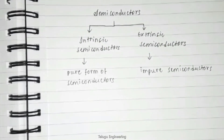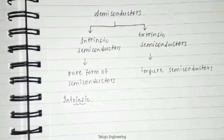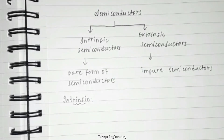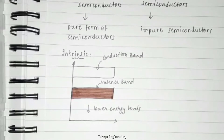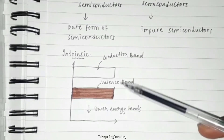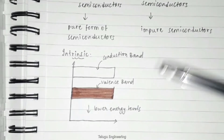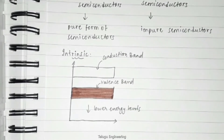An extremely pure semiconductor is called an intrinsic semiconductor. On the basis of the energy band phenomenon, an intrinsic semiconductor at absolute zero temperature has a valence band that is completely filled and a conduction band that is empty, as shown in the energy band diagram.